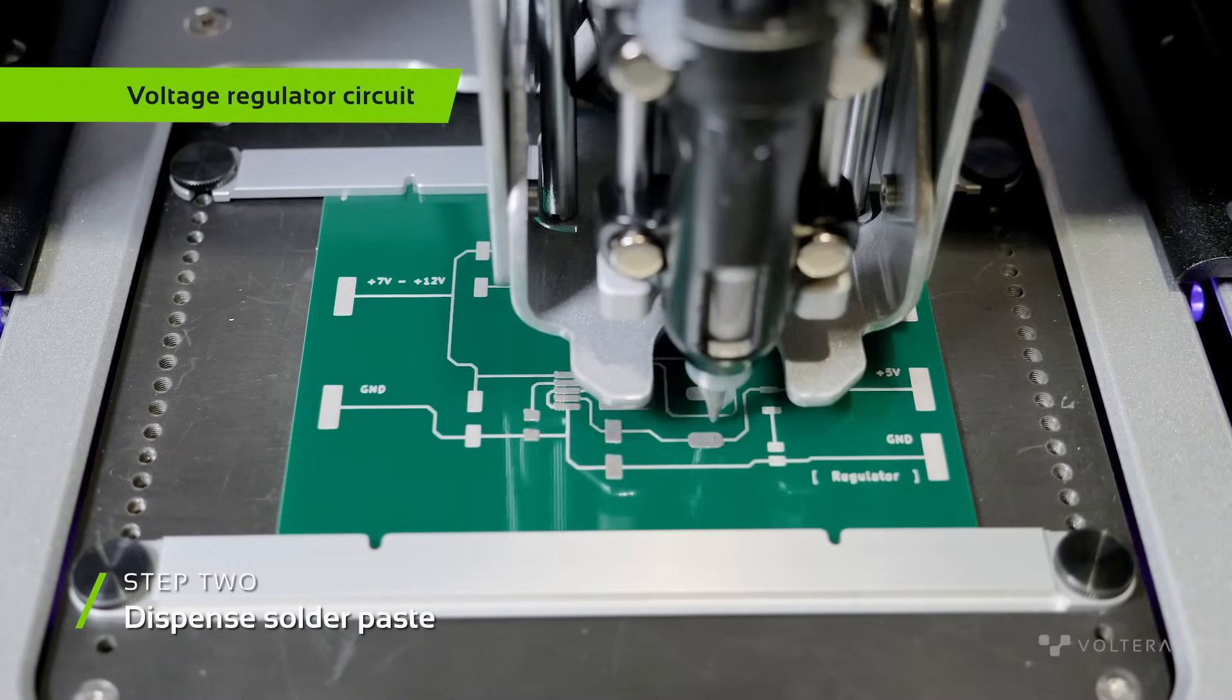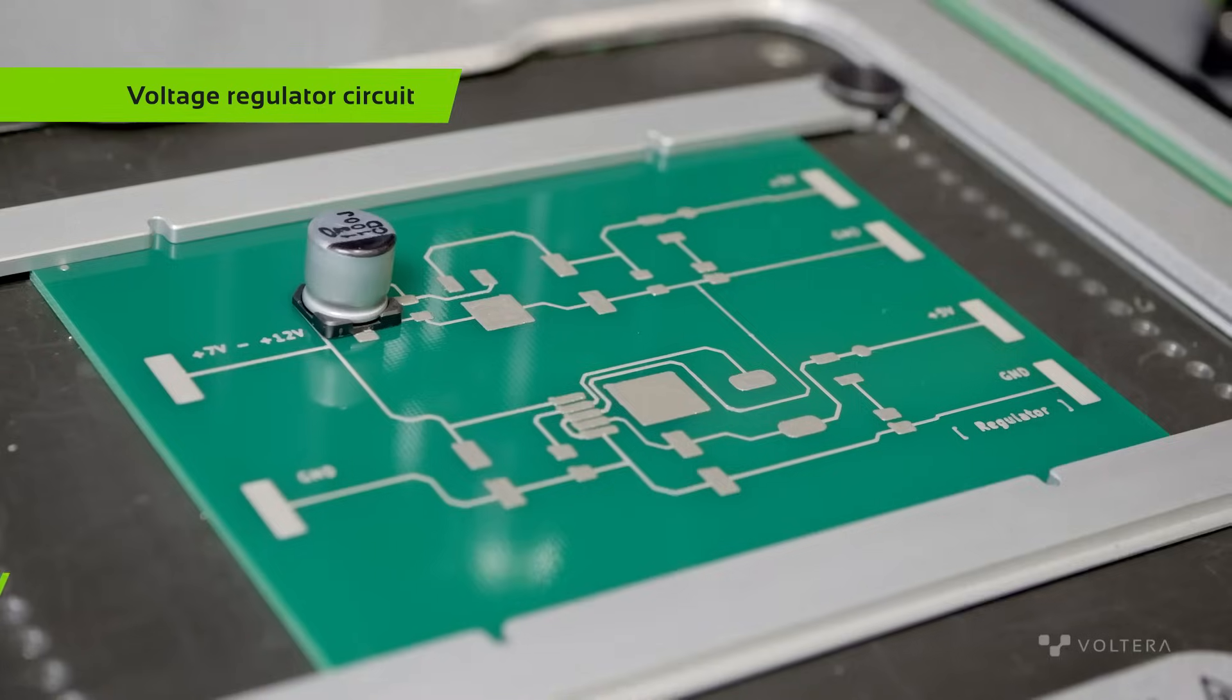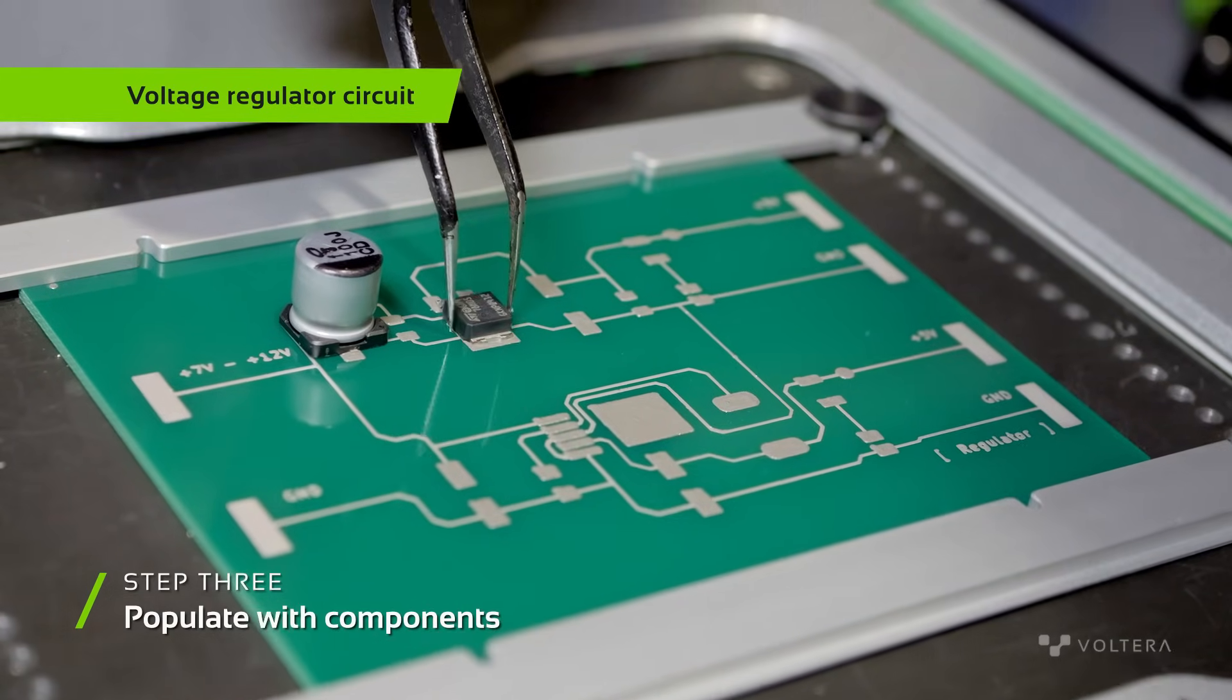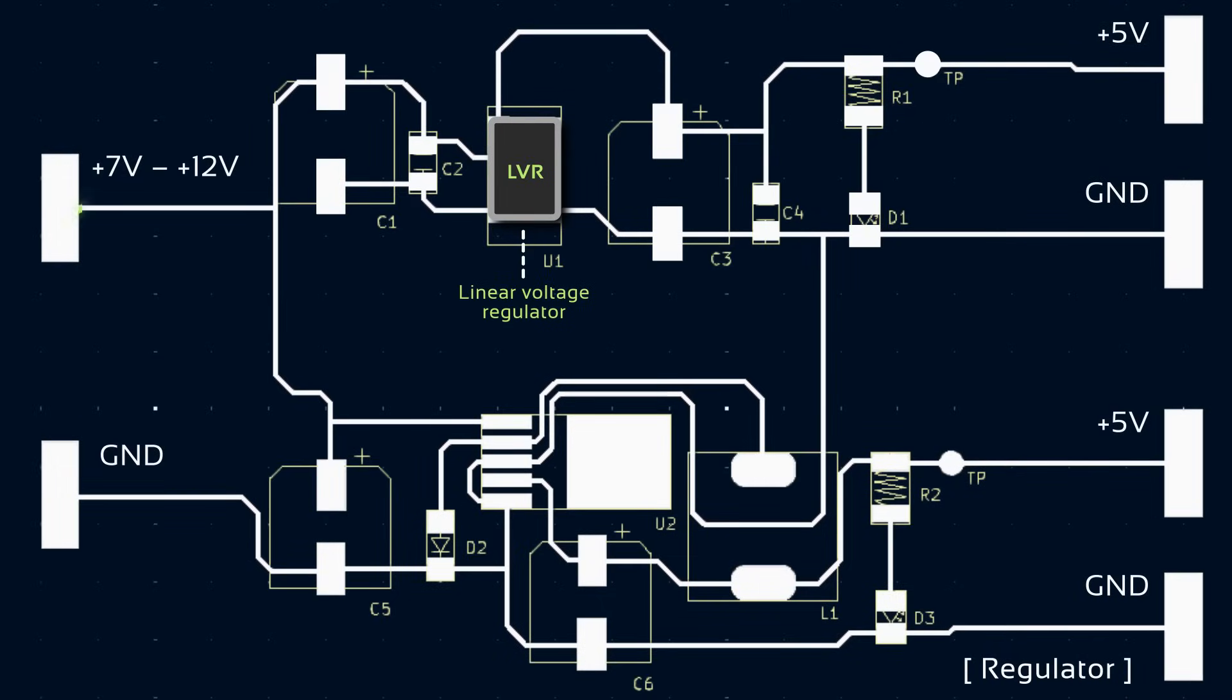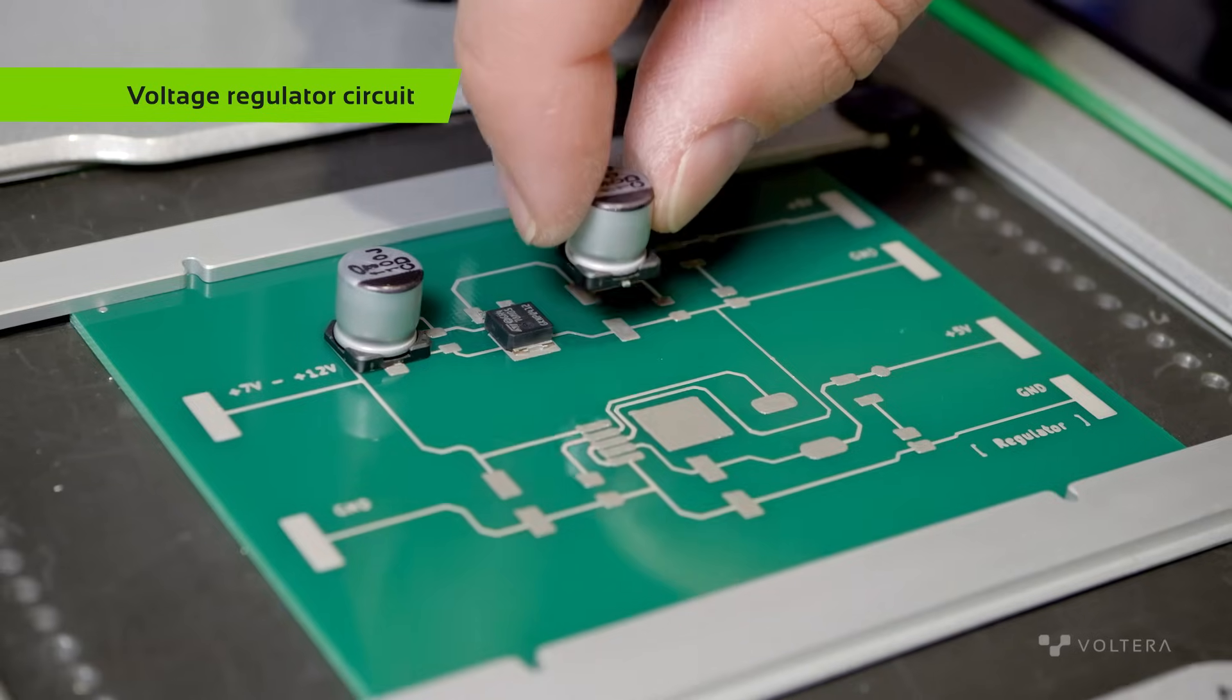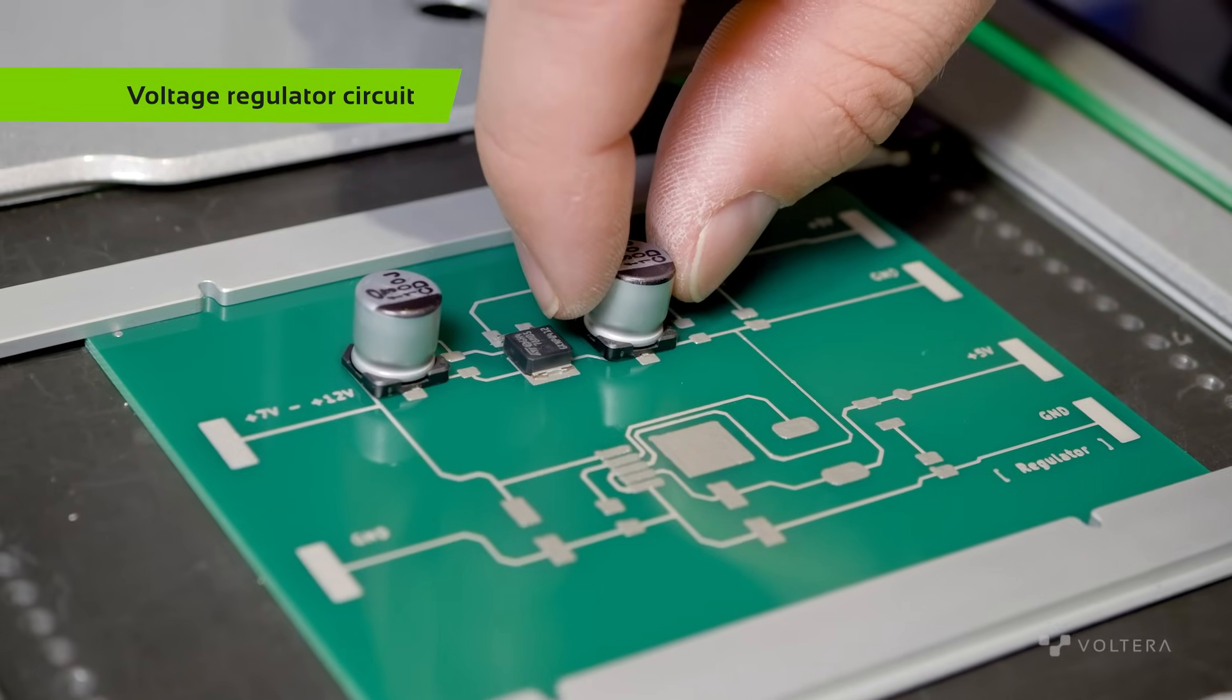Here's a quick overview of the two types of voltage regulators we will be using today. First is the Linear Voltage Regulator, which works by taking an input voltage, dissipating excess energy as heat, and outputting a stable voltage. This kind of regulator is good for low-power applications, as they tend to be inefficient.